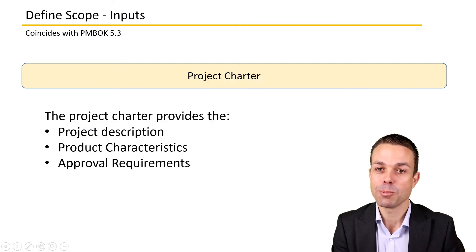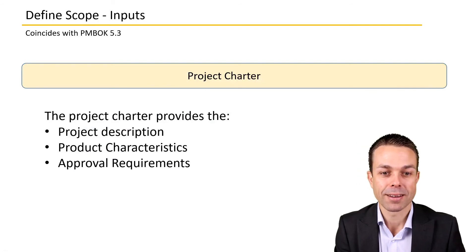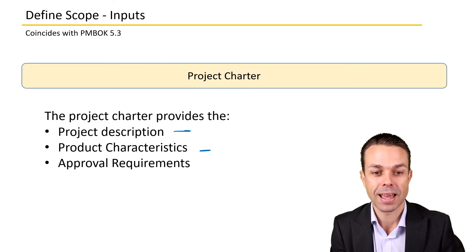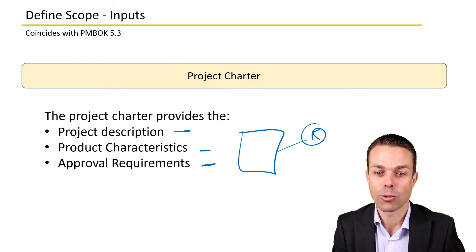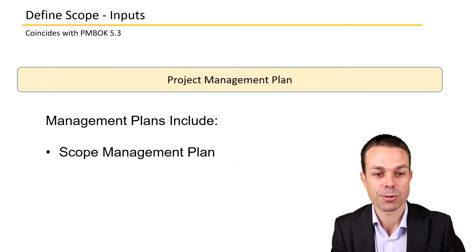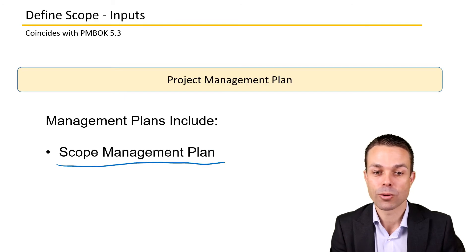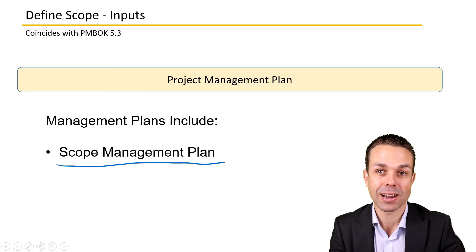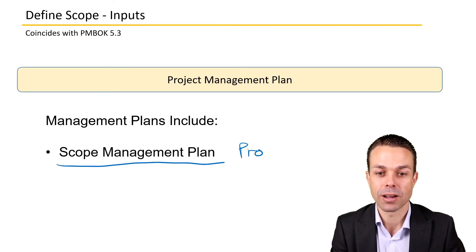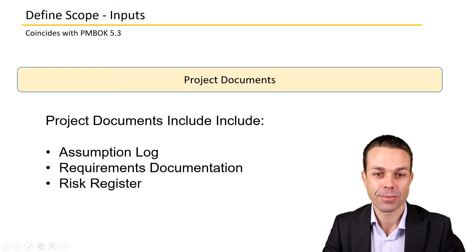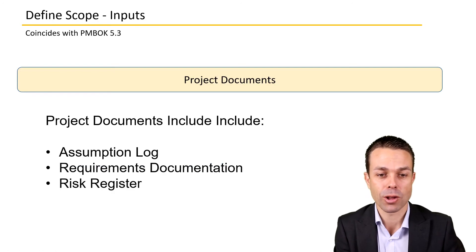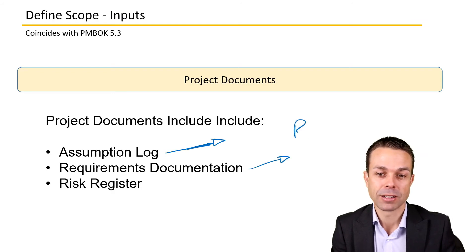Looking at inputs in more detail: the project charter provides the project description, product characteristics, and approval requirements — that high-level view. We've gathered requirements and now we're delving deeper into the scope, what we're actually going to be delivering. We'll also have the project management plan, specifically the scope management plan, which describes how we're going about collecting and analyzing the scope — the process for how we're going to do it.